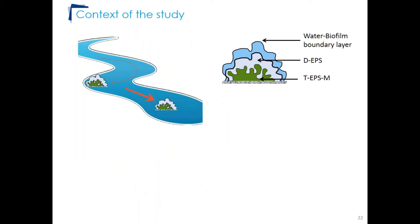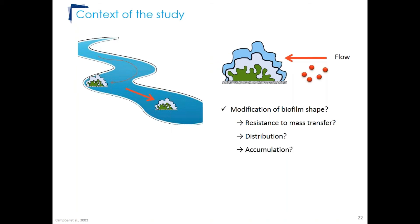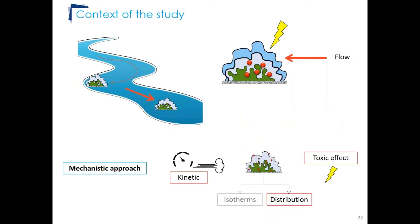Depending on their location in the watercourse, biofilms are not exposed to the same flow velocities. We can suppose that high flow velocity can modify the biofilm state and consequently its resistance to mass transfer — that is, its resistance to pesticide transfer into the biofilm. High flow velocity could also impact pesticide distribution, pesticide accumulation, and consequently the associated toxic impact. A mechanistic approach was used to determine the kinetics and distribution of diuron in the biofilm and to assess its toxic impact.